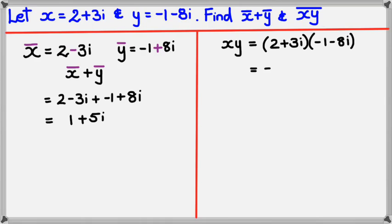Now this is just standard expansion that you would have done in the last two videos maybe. So we would have negative 2 minus 16i minus 3i, then we've got minus 24i squared.